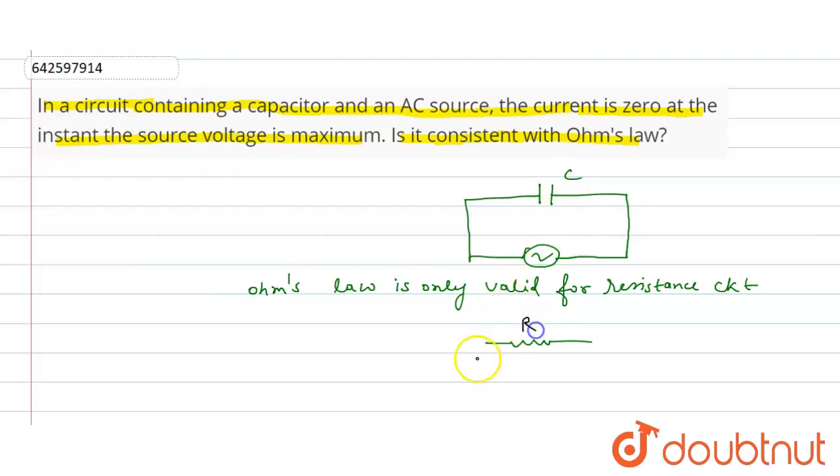So here resistance is there and if this is connected with this battery, so in this circuit Ohm's law is valid. But in this circuit, Ohm's law is not valid.